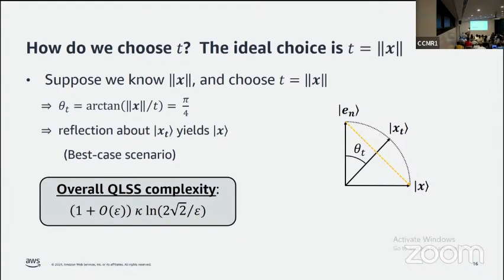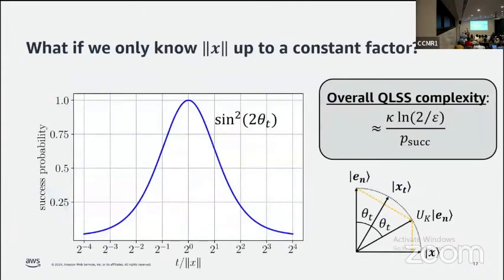The only reason it's not 1 is because of the imperfectness of the reflection itself. This means the overall query complexity is just one call to kernel reflection. The cost of kernel reflection is given by this κ log(1/ε) scaling. That's because the degree of this polynomial has linear in κ scaling and logarithmic in 1/ε scaling. So if we know the Euclidean norm of x, we can choose t equal to the norm and give an algorithm with optimal asymptotic complexity and constant prefactor equal to basically just one, much smaller than what could be done with the adiabatic method.